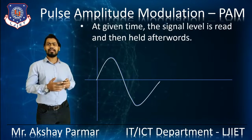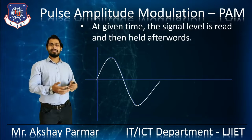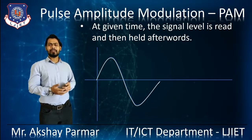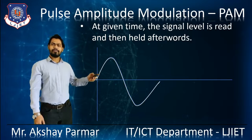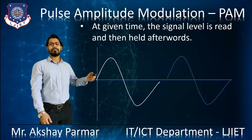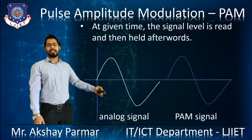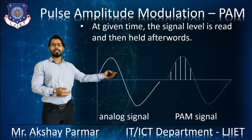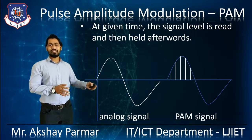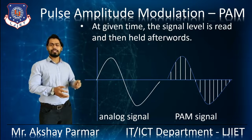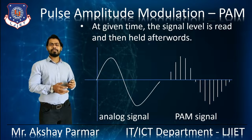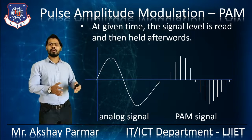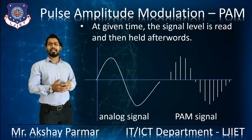Let's see how PAM works. At a given time, the signal level is read and held afterwards. This is the Analog Signal on which we apply Pulse Amplitude Modulation. We will measure the amplitude at a particular time interval. We are measuring the amplitude of the signal at the particular time interval, and after that we read and hold the signal. This is the PAM signal — we have measured the particular amplitude at the given time with the particular time interval. This is called PAM Modulation.